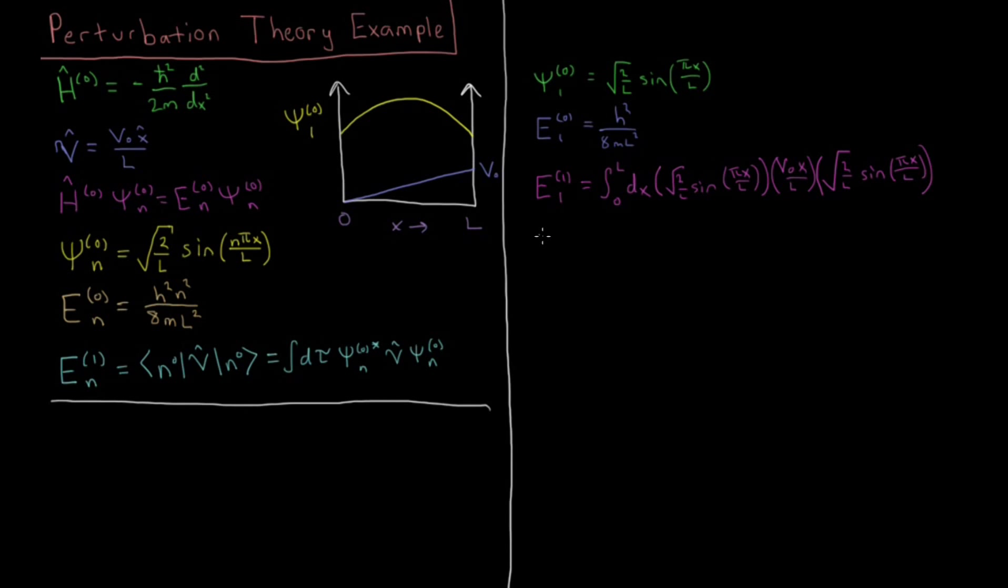We can rewrite this integral in a more convenient form. We can factor out this factor of square root of 2 over l, square root of 2 over l. That combines to give us a 2 over l. Then we also have a v-naught and l, which are constants here, so I can pull out that v-naught as well and make that l-squared. Then I still have integral from 0 to l. I have this x which is going to be left in there. I have sine pi x over l times sine pi x over l, so it's going to give me sine squared pi x over l, integrated with respect to x.